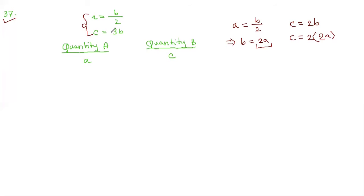So C equals 3B — putting in B equals 2A, we get C equals 3 times 2A, which means C equals 6A.